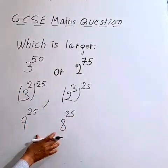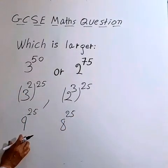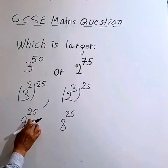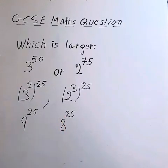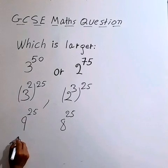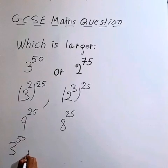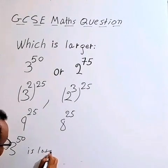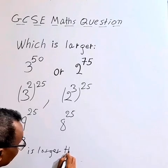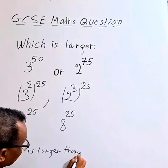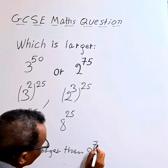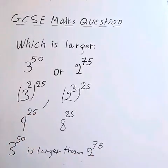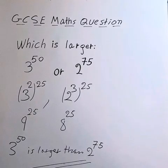Now both numbers are in similar form, and 9 to the power of 25 is larger than 8 to the power of 25. So 3 to the power of 50 is larger than 2 to the power of 75. Thank you very much.